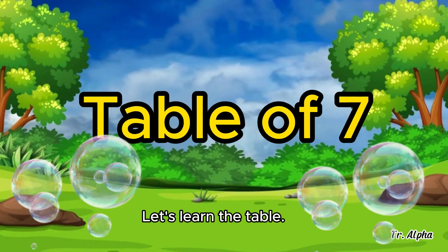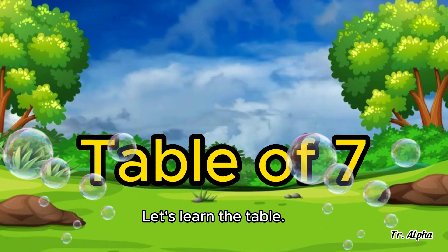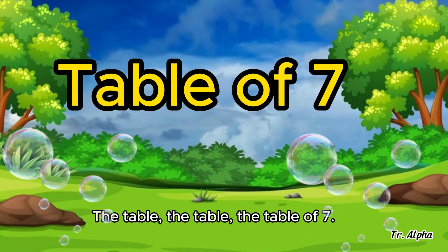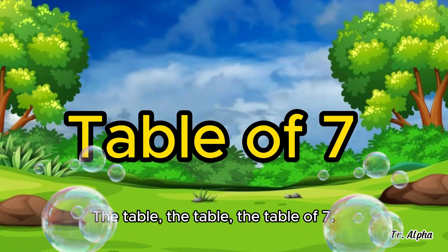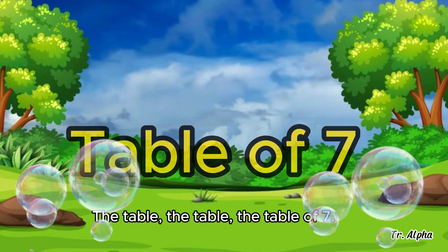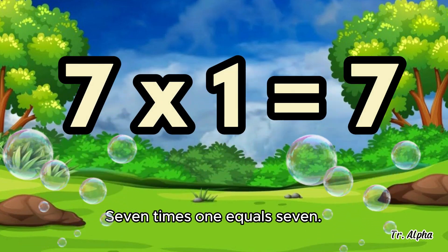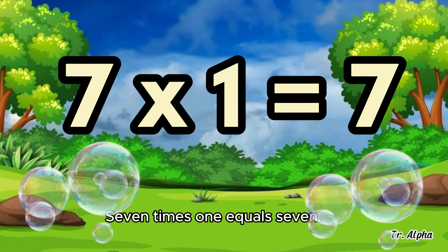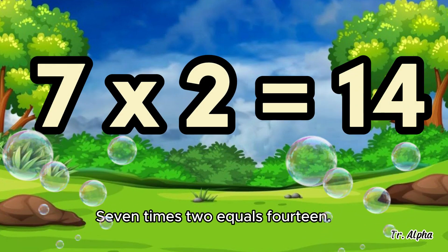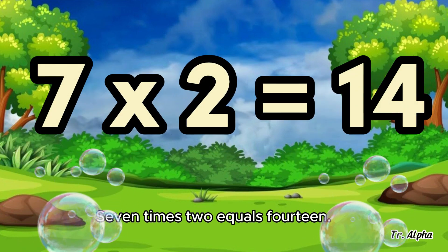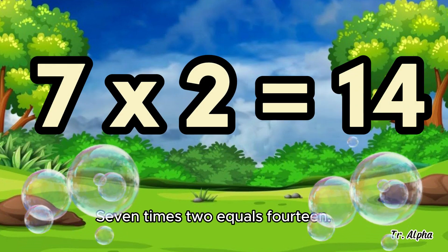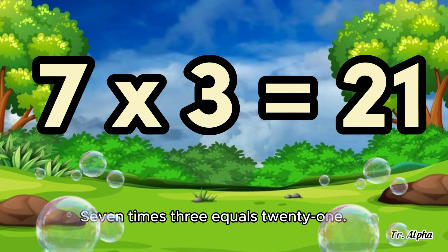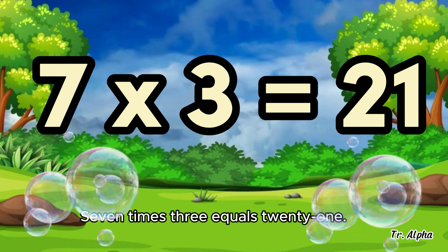Let's learn the table. The table, the table, the table of 7. 7 times 1 equals 7. 7 times 2 equals 14. 7 times 3 equals 21.